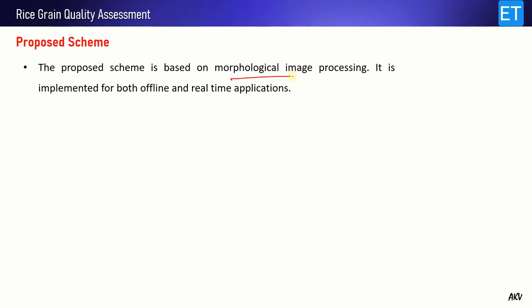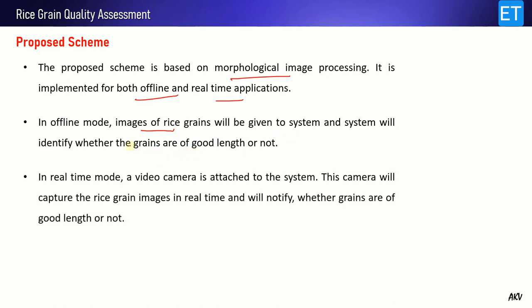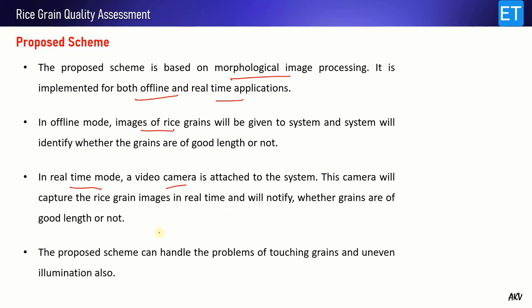This scheme is based on morphological image processing and is implemented for both offline and real-time applications. In offline mode, I will provide some images of rice grains to the system and the system will tell me whether the grains are of good quality or not on the basis of length. In real-time mode, a video camera will be attached to the system which will capture rice grain images in real-time and notify me whether the rice grains are of good length or not. This proposed scheme also has the ability to handle the problems of touching grains and uneven illumination.